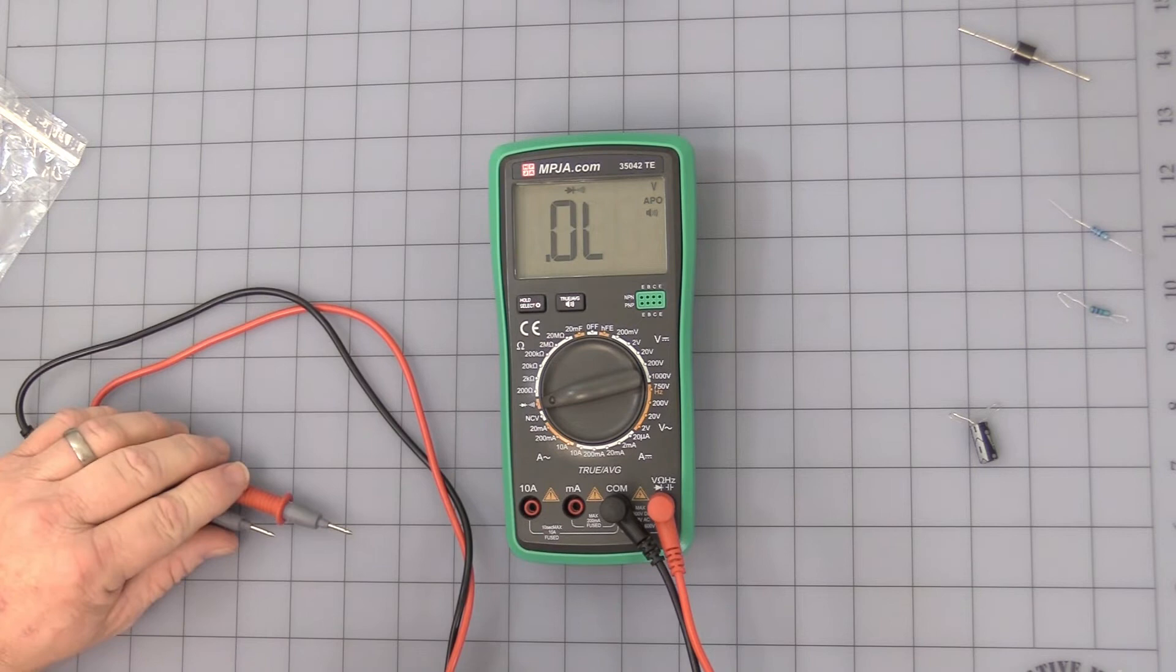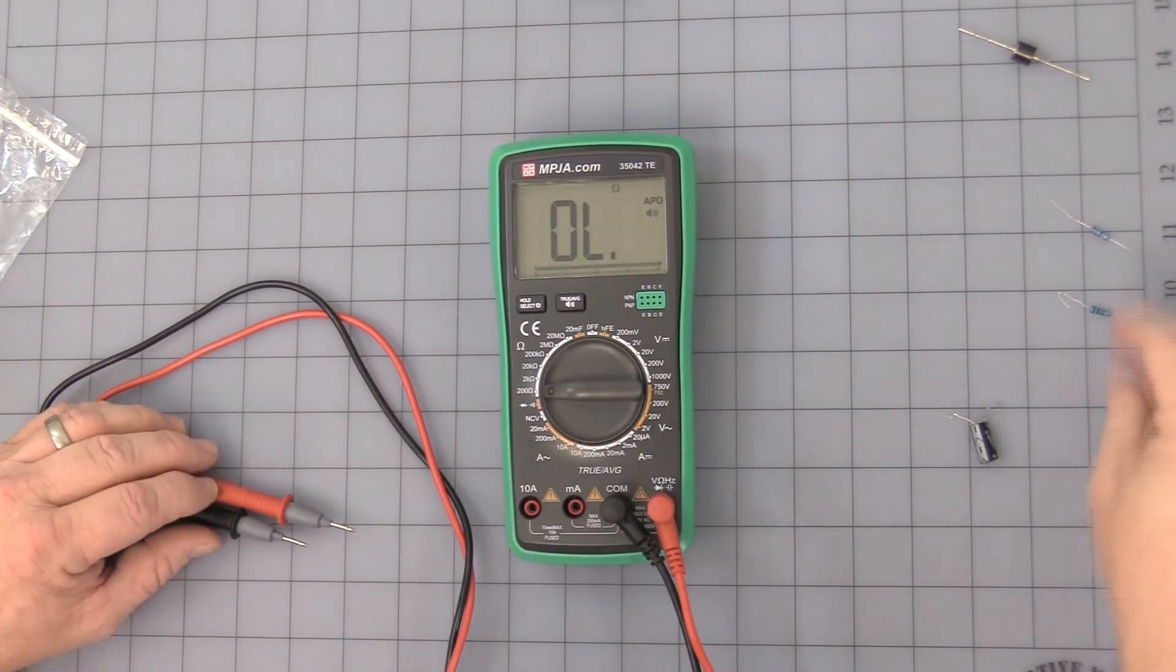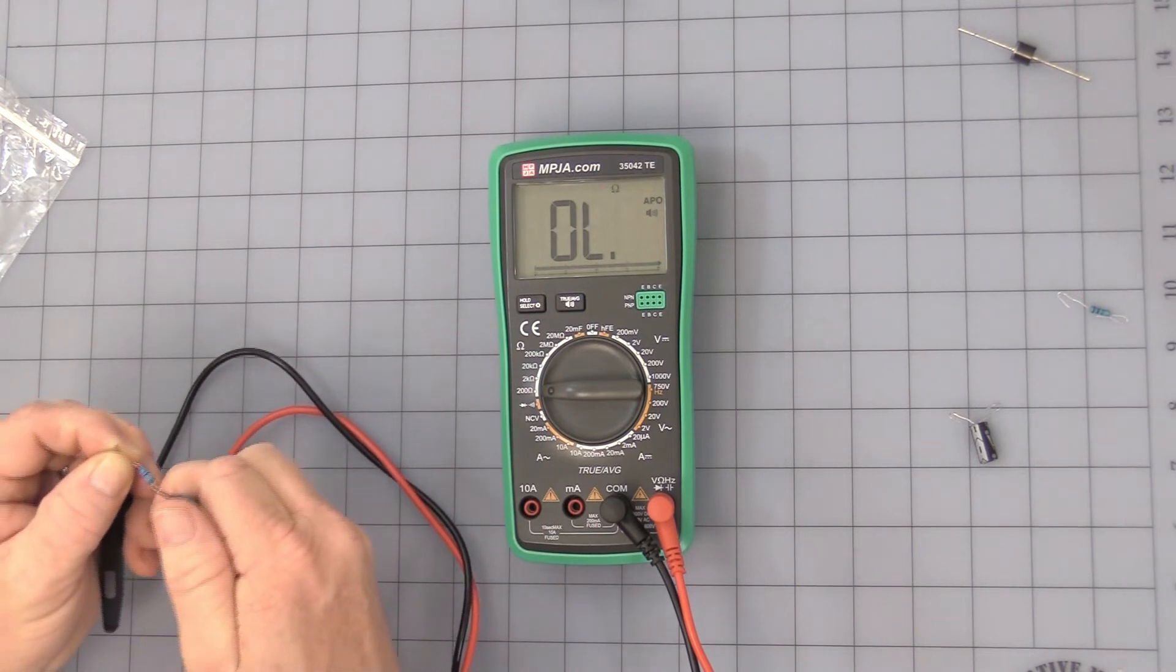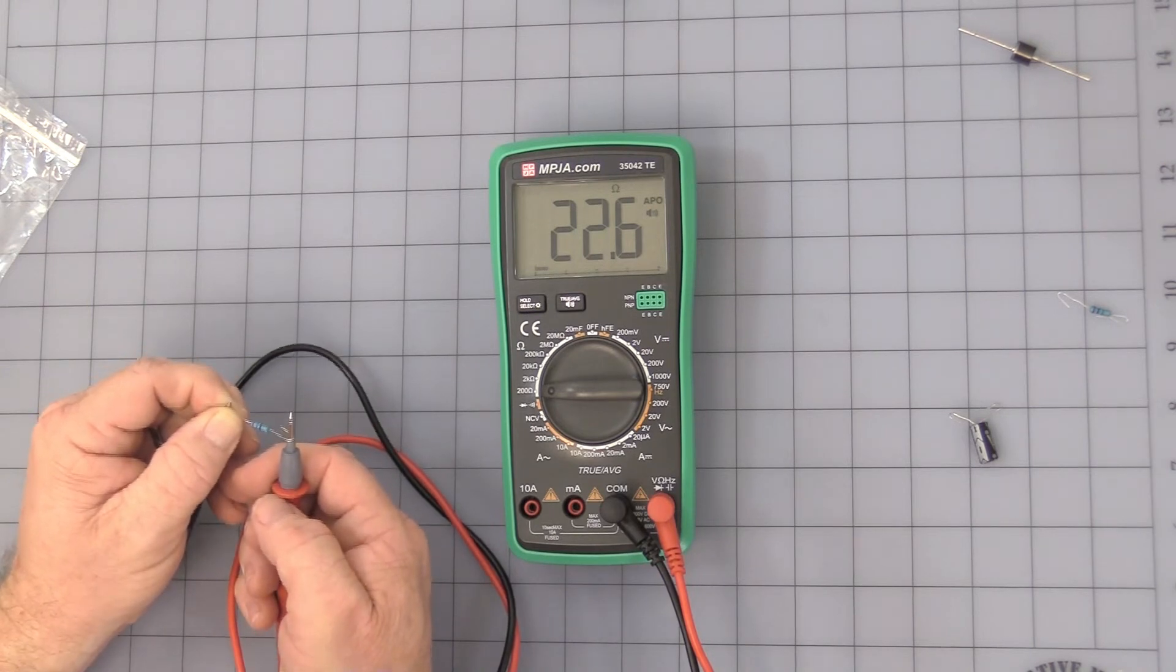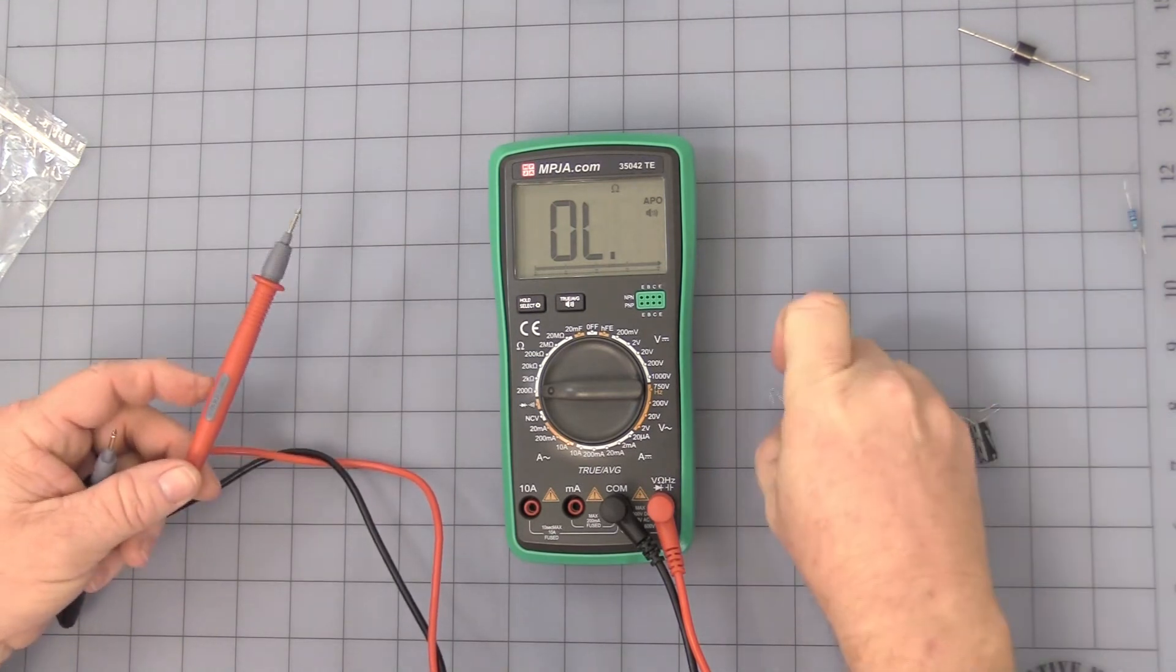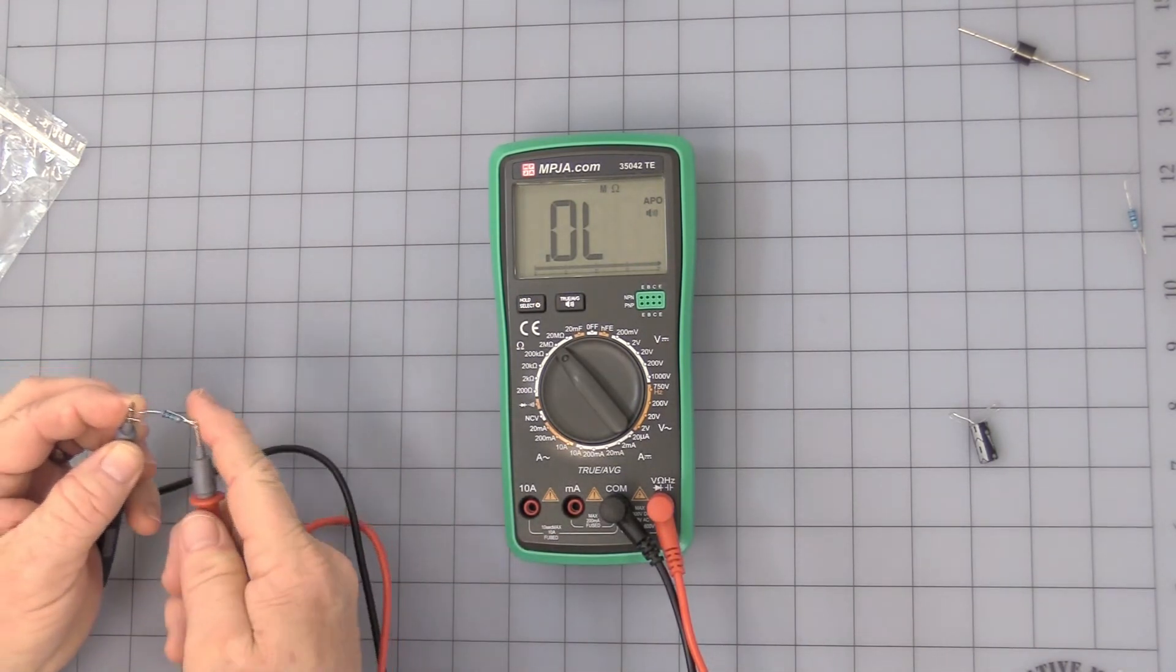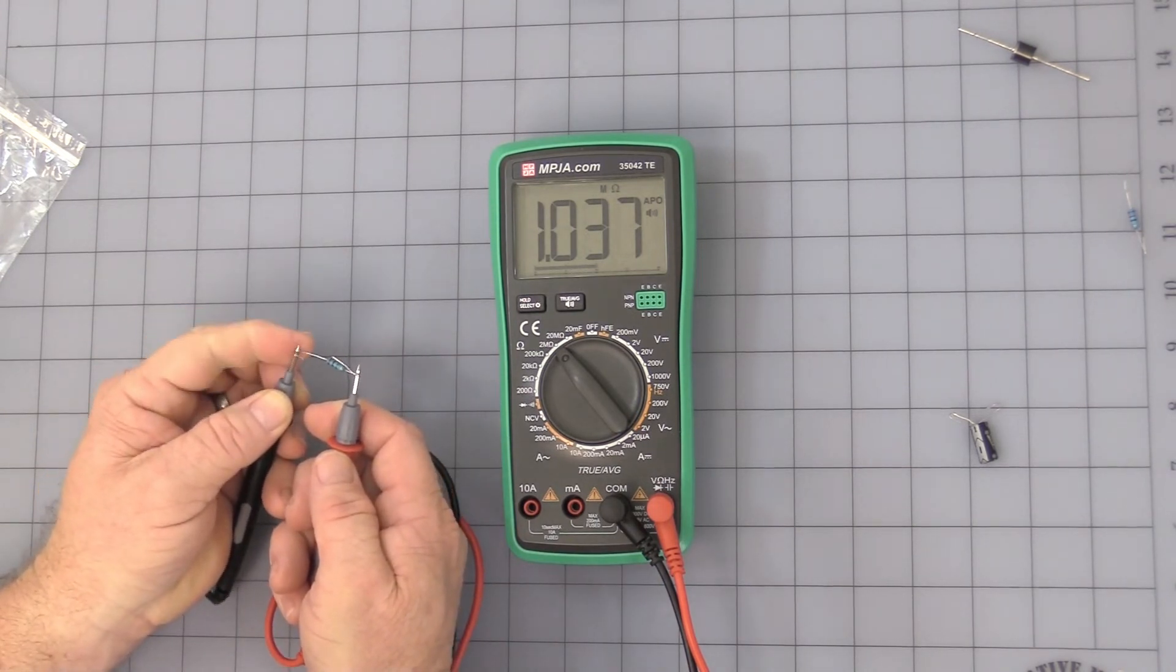Okay, now let's get into the resistance range. Let's turn it to 200 ohms. I have a low ohm resistor over here. I believe it is 22 ohms. So let's give that a measure. 22.6 ohm. Okay. Now I have a 1 meg ohm resistor here. Let's turn that up to the 2 meg range. 1.037 million ohms. Okay.